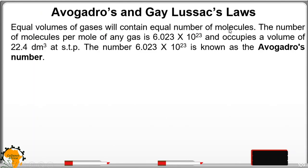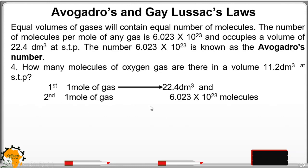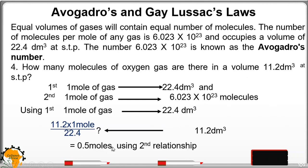Equal volumes of gases will contain equal number of molecules. The number of molecules per mole of any gas is 6.023 times 10 to power 23, and this was referred as Avogadro's constant, or Avogadro's number, and it occupies the volume of 22.4 dm³ at STP. The Avogadro's constant is denoted by capital L, as we said earlier. How many molecules of oxygen are there in a volume of 11.2 dm³ at STP? One mole of a gas equals 22.4 dm³ at STP.